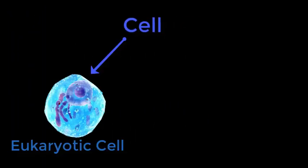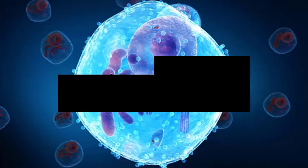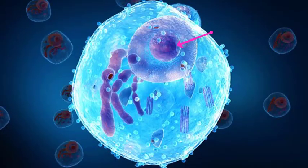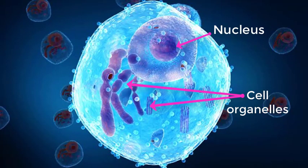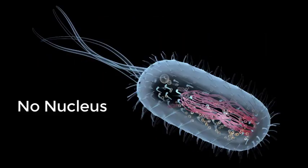There are basically two types that exist: a eukaryotic and a prokaryotic cell. A eukaryotic cell is one in which a nucleus is found along with several organelles, whereas a prokaryotic type is one which is devoid of a nucleus.